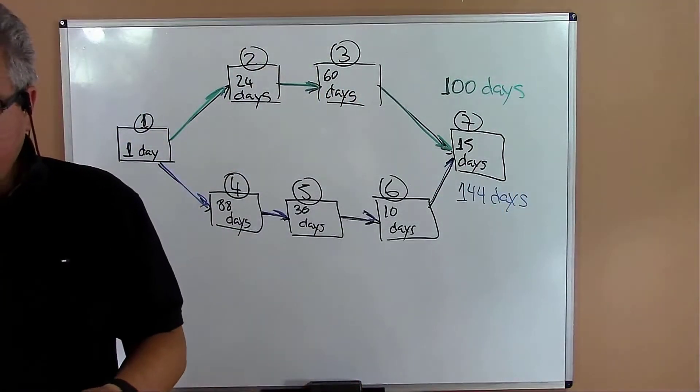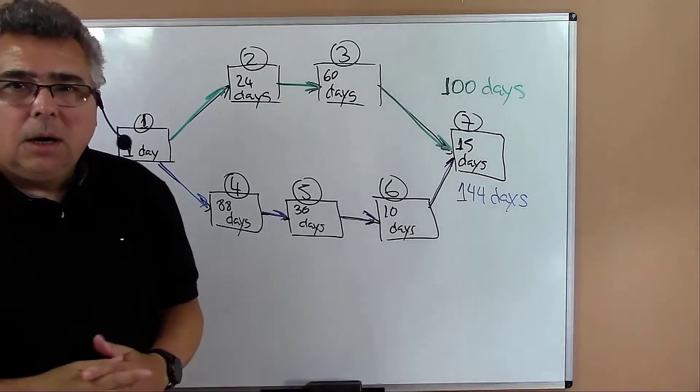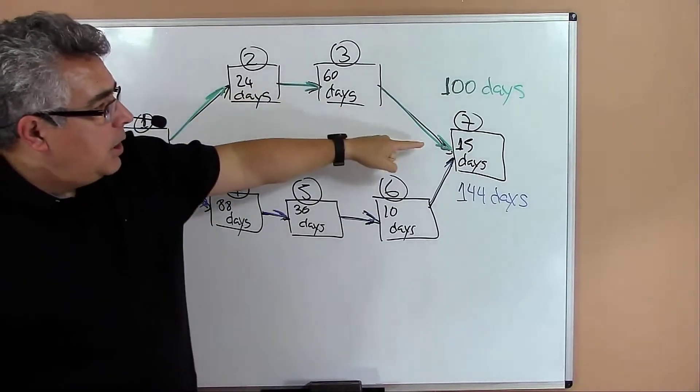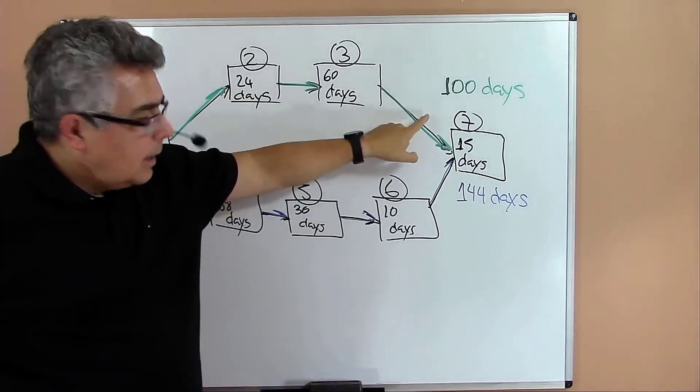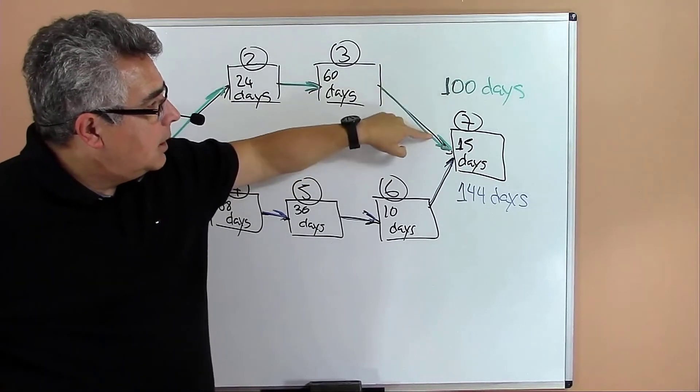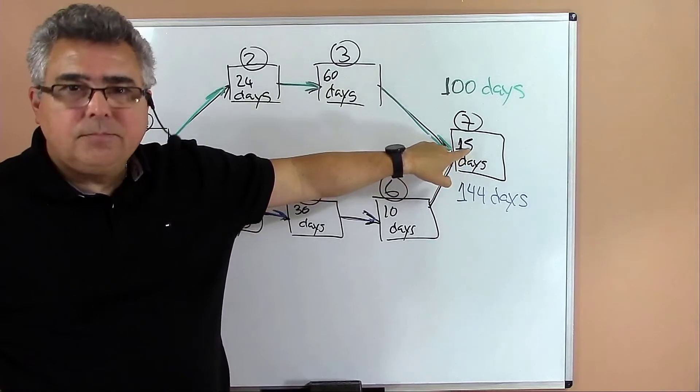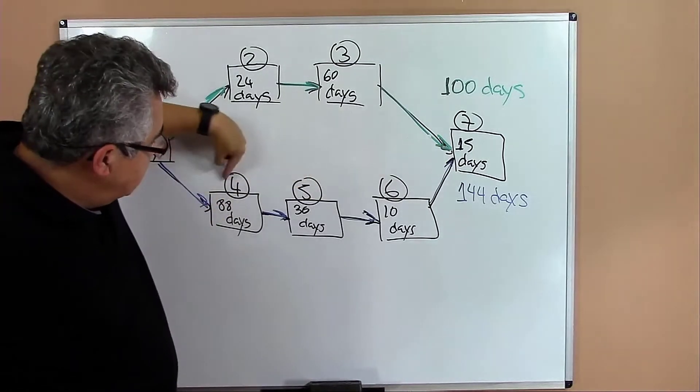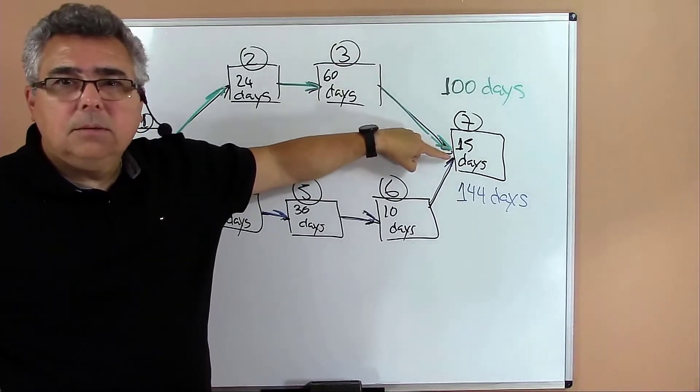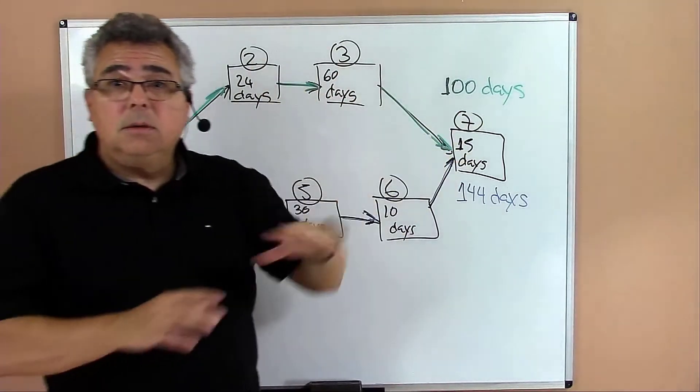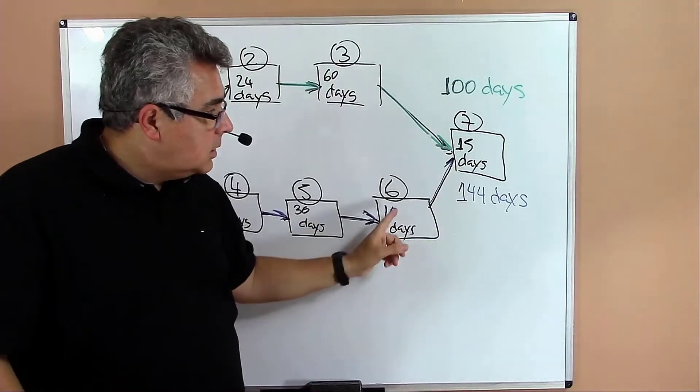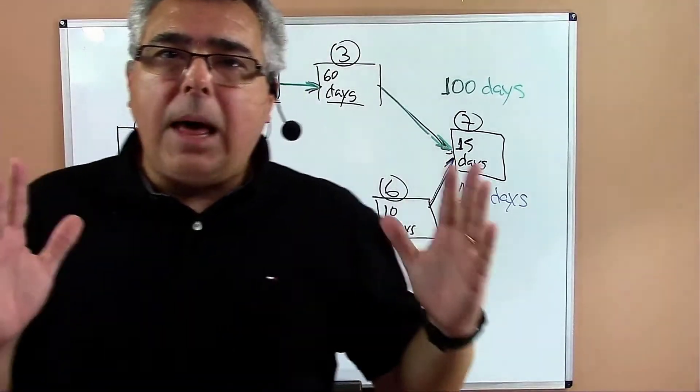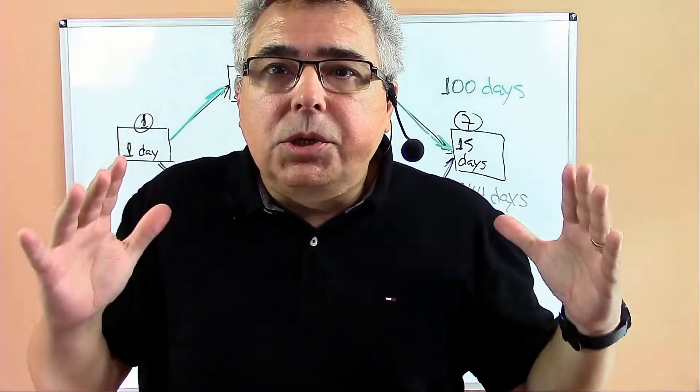The green is 100 days and the blue is 144, so the project duration: let's suppose I start the green, I can finish here. I arrive at that spot in exactly 100 days. Can I start activity seven? No, I have to wait until I finish all the activities in the blue path to start activity seven. So the longest path in the network, we call that critical path.